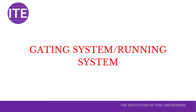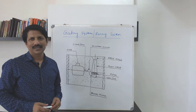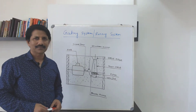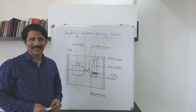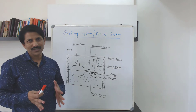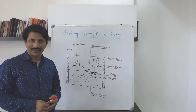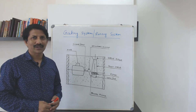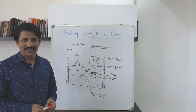Welcome to a very new and interesting topic: the gating system or running system. A gating system means a passage which ensures smooth filling of metal in the mold cavity.